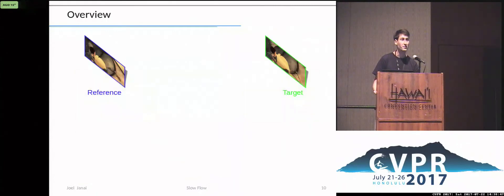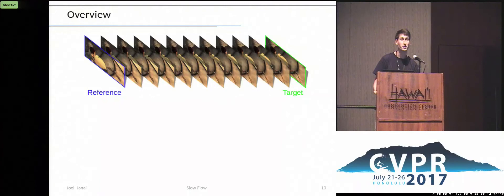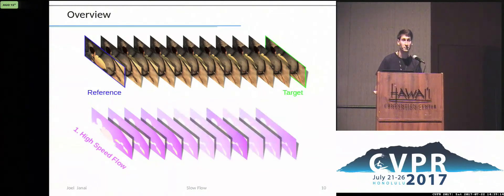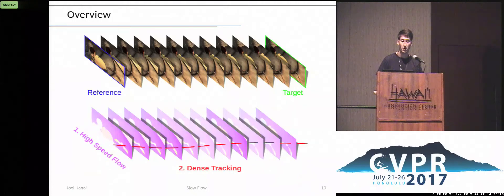The idea is to leverage as much information as possible. A high spatial resolution allows to capture fine structure details, while a high frame rate yields small displacements and allows to reason over multiple frames. Directly optimizing the flow from the reference frame to the target frame through the large volume of the high-speed sequence is difficult. Therefore, we split the problem into two parts: first, we compute the flow for consecutive high-speed frames; second, we optimize over all frames with a dense tracking formulation.